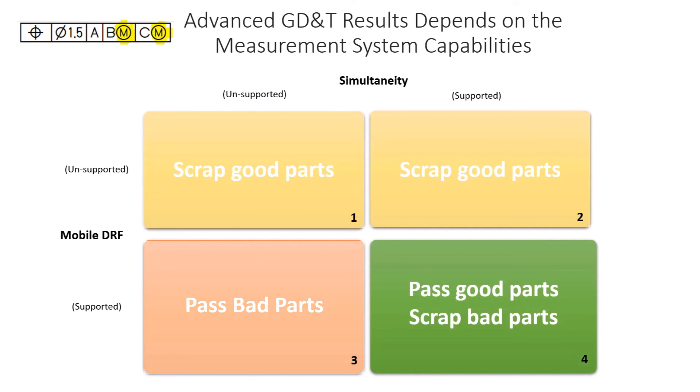And finally, if your machine supports both mobile DRFs and simultaneity, then datum alignment shift from datum bonus is exploited while ensuring all tolerance are evaluated with the same shift. In other words, the parts are going to fit.